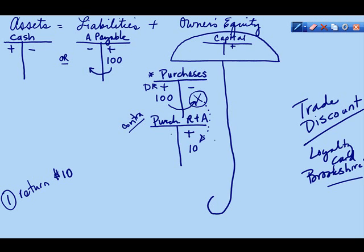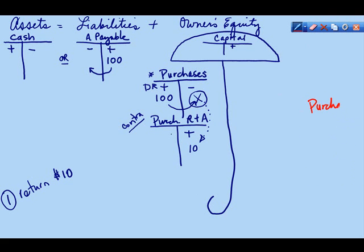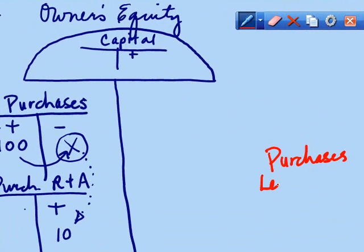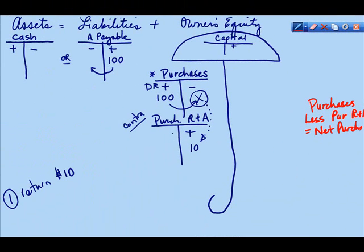For future reference, you would always have purchases less purchase returns, which equals net purchases. With this contra account, you'll always see those two together — never apart. This is kind of like a shadow to your Purchases account.